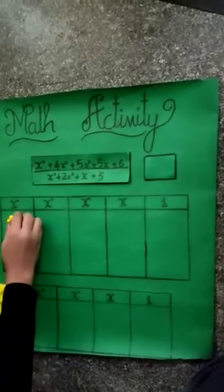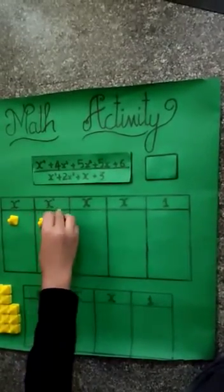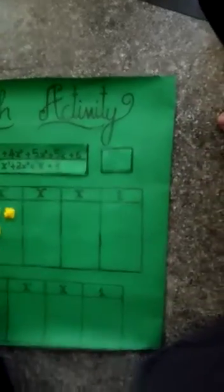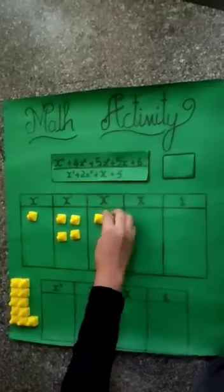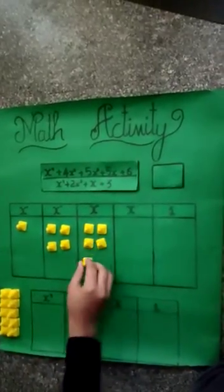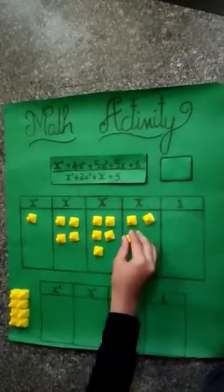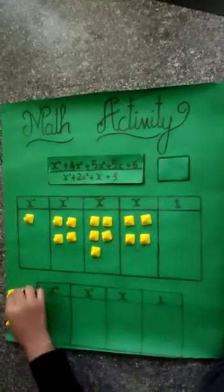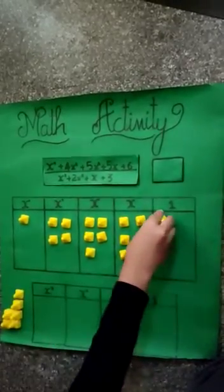I am going to place 1 cone here, 4 cones here, 5 cones here, then again 5 cones here, and now 6 cones.